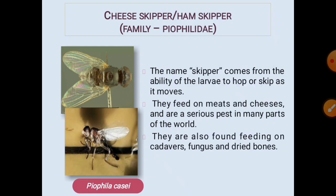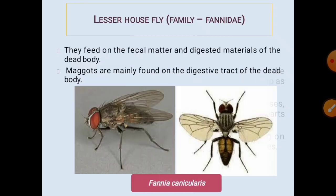Cheese skippers or ham skippers from the family Piophilidae, order Diptera: the name 'skipper' comes from the ability of the larvae to hop or skip as they move. They feed on meats and cheeses and are a serious pest in many parts of the world; they are also found feeding on cadavers, fungus, and dried bones. Example: Piophila. The lesser house fly from the family Fanniidae feeds on fecal matter and digested materials of the dead body; maggots are mainly found on the digestive tract. Example: Fannia canicularis.